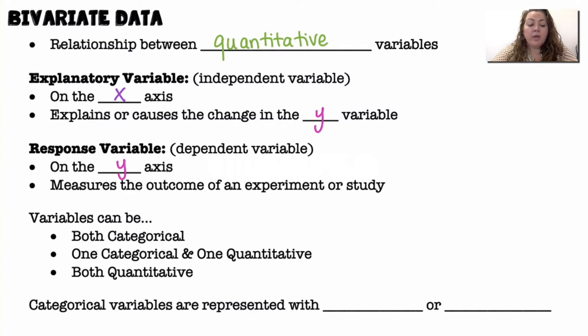Variables can be both categorical, one categorical and one quantitative, or both quantitative. Categorical variables are represented with colors or symbols.